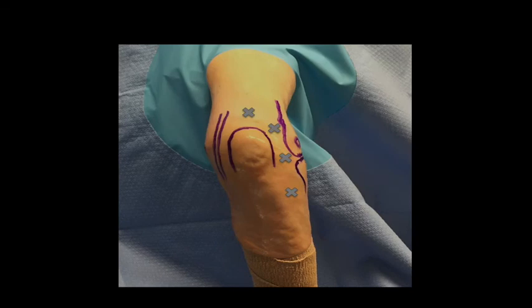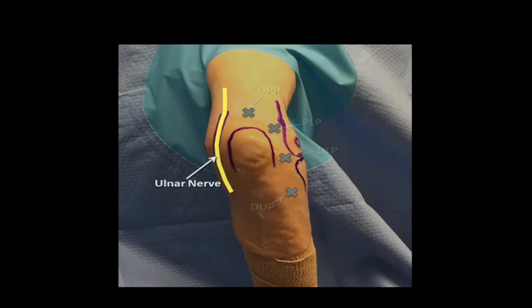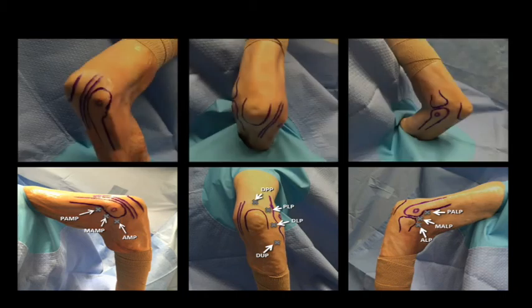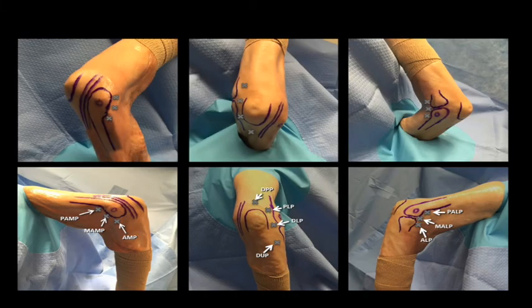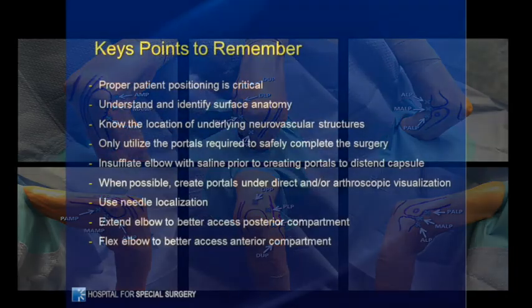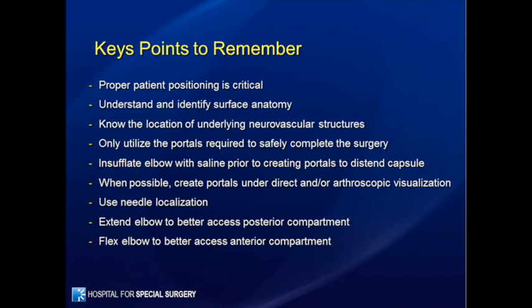Here are the four most commonly used posterior elbow portals, all of which are safely located away from the ulnar nerve. In summary, here are the most commonly used portals on the medial, posterior, and lateral sides of the elbow in the lateral decubitus position and the supine position. Here are a few of the key points to remember for portal placement during elbow arthroscopy.